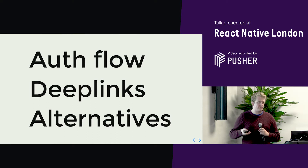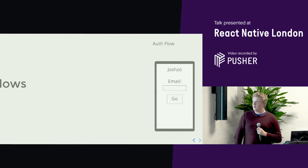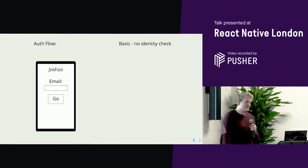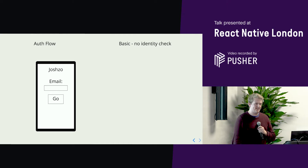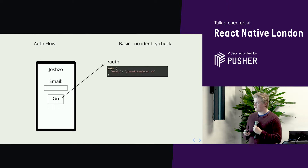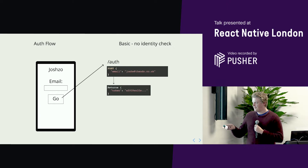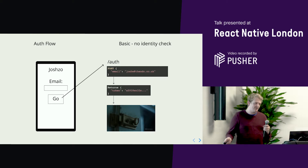Let's jump straight into the auth flows. This is a very basic one — welcome to Joshso, the new hip startup that collects emails. The first thing you can do is very simple auth: you just have an endpoint that accepts an email address and gives you an auth token and you're in. Obviously we don't want to do this — it's very insecure. Any user can log in as any other user. But it's a good first step.